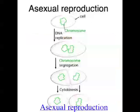So the first thing I want to talk about is asexual reproduction. Asexual reproduction is basically when one organism makes a whole new organism just by itself, and that new organism is a perfect copy or a clone of the first organism. And there's several different types of asexual reproduction.